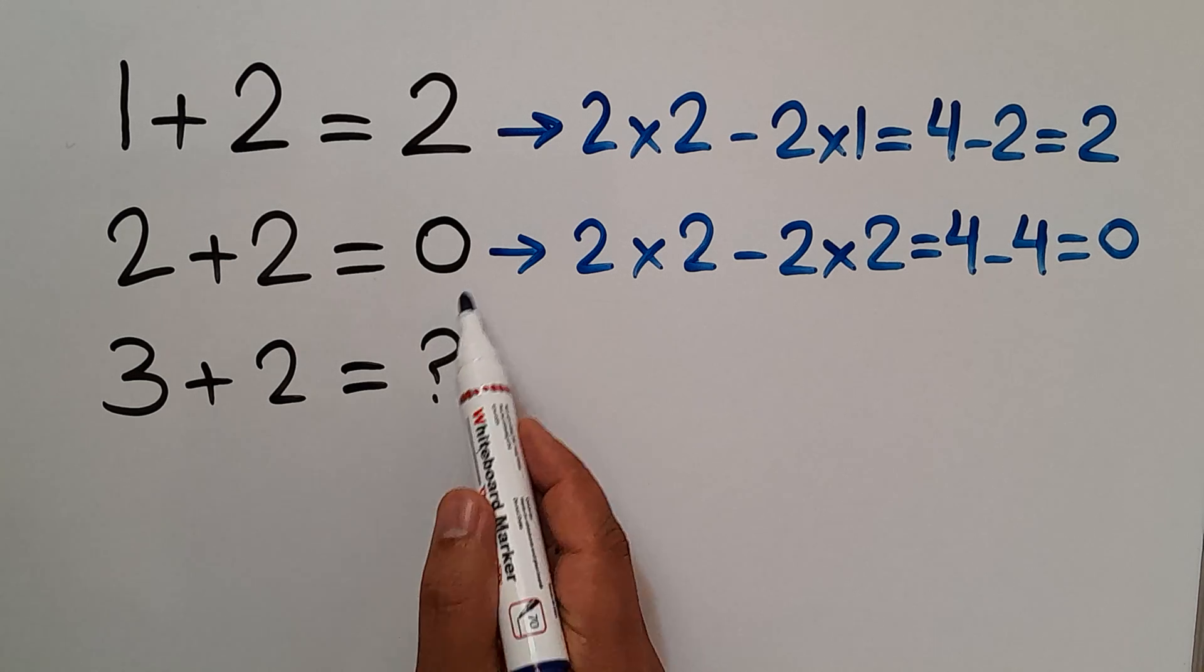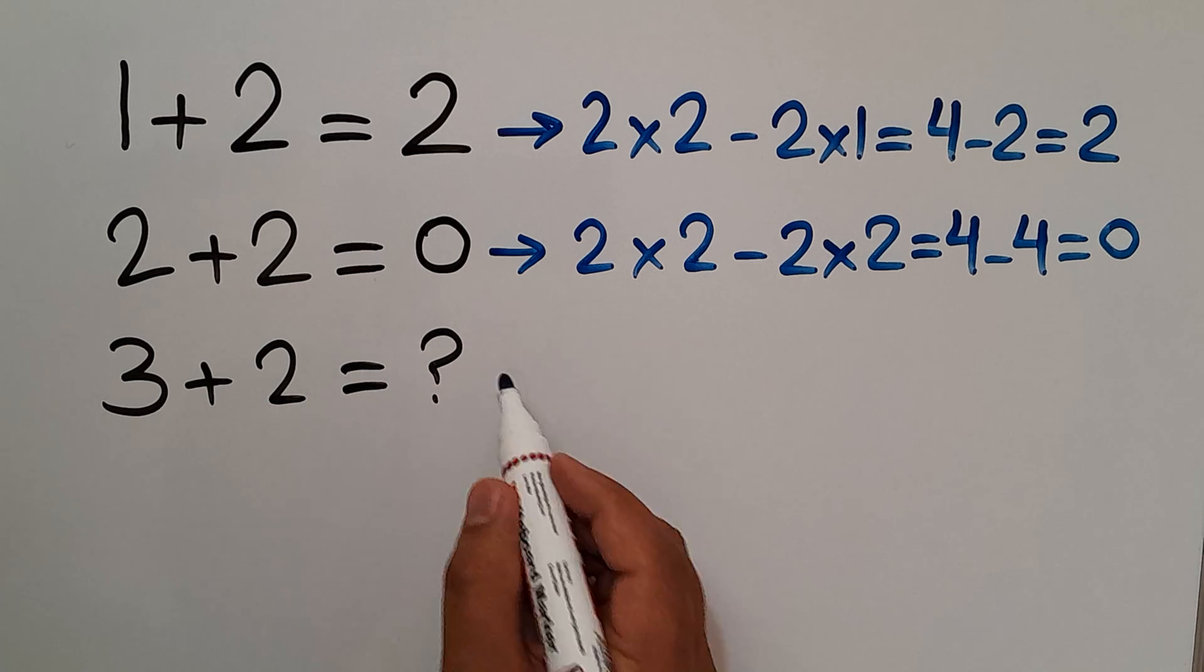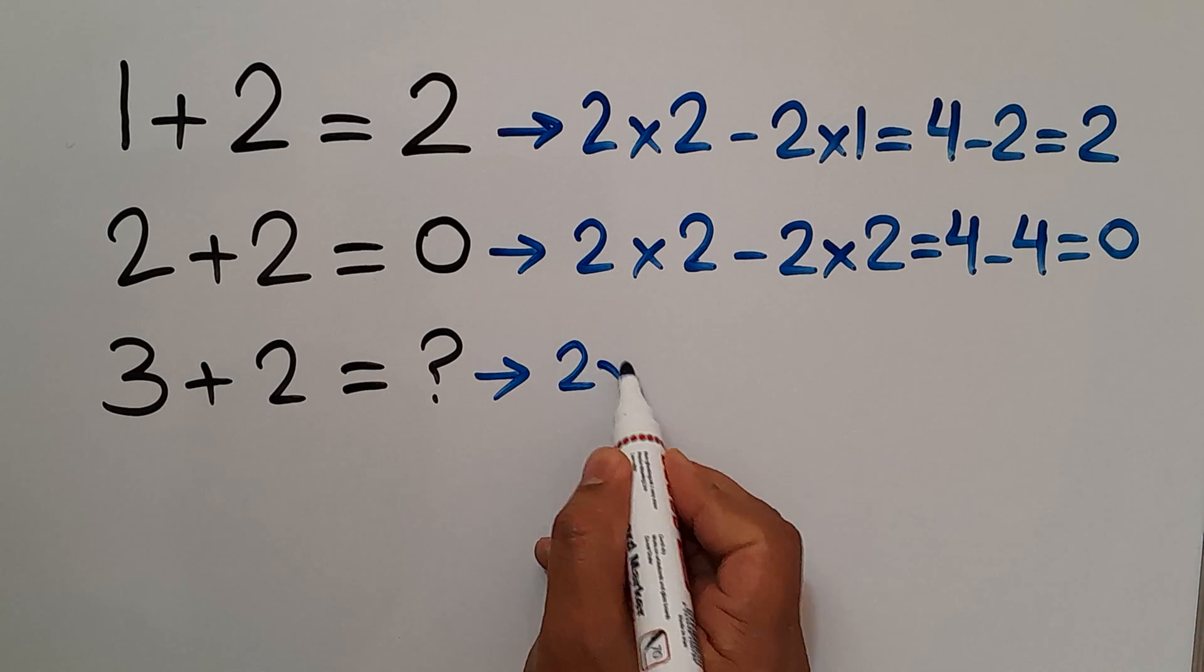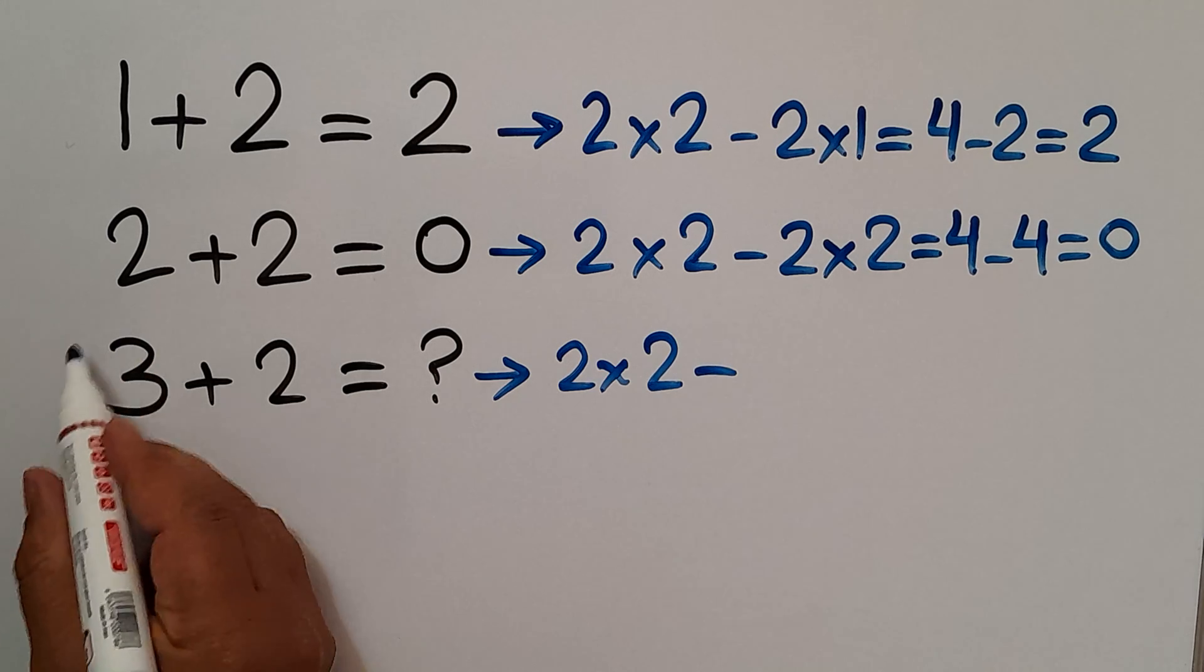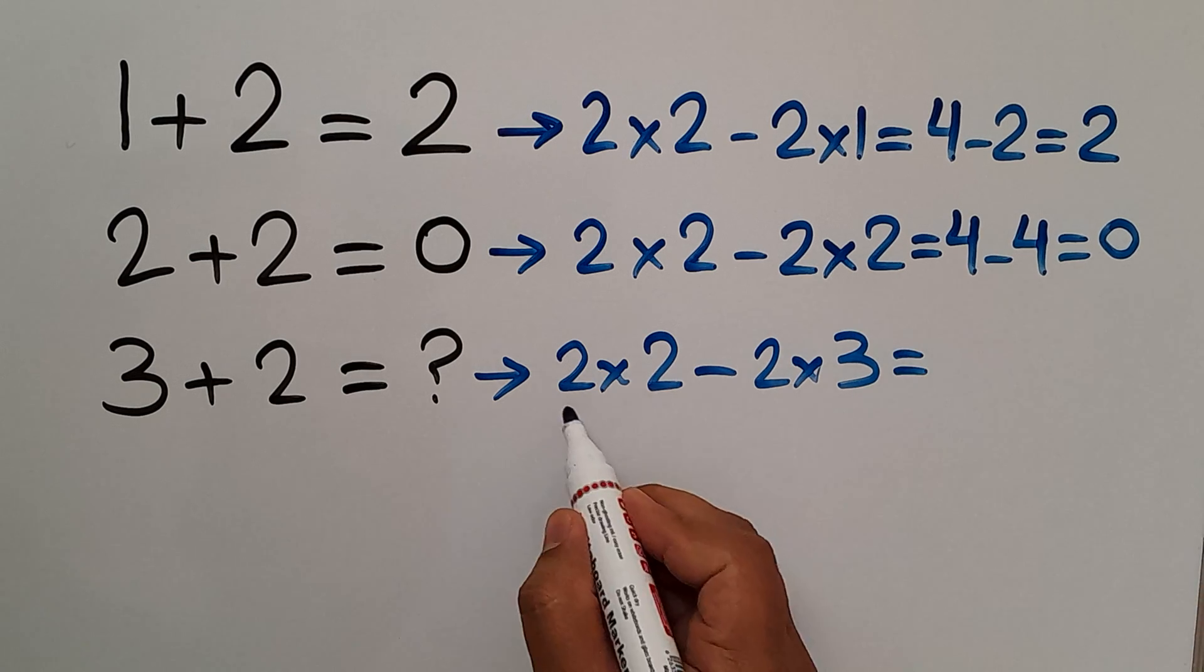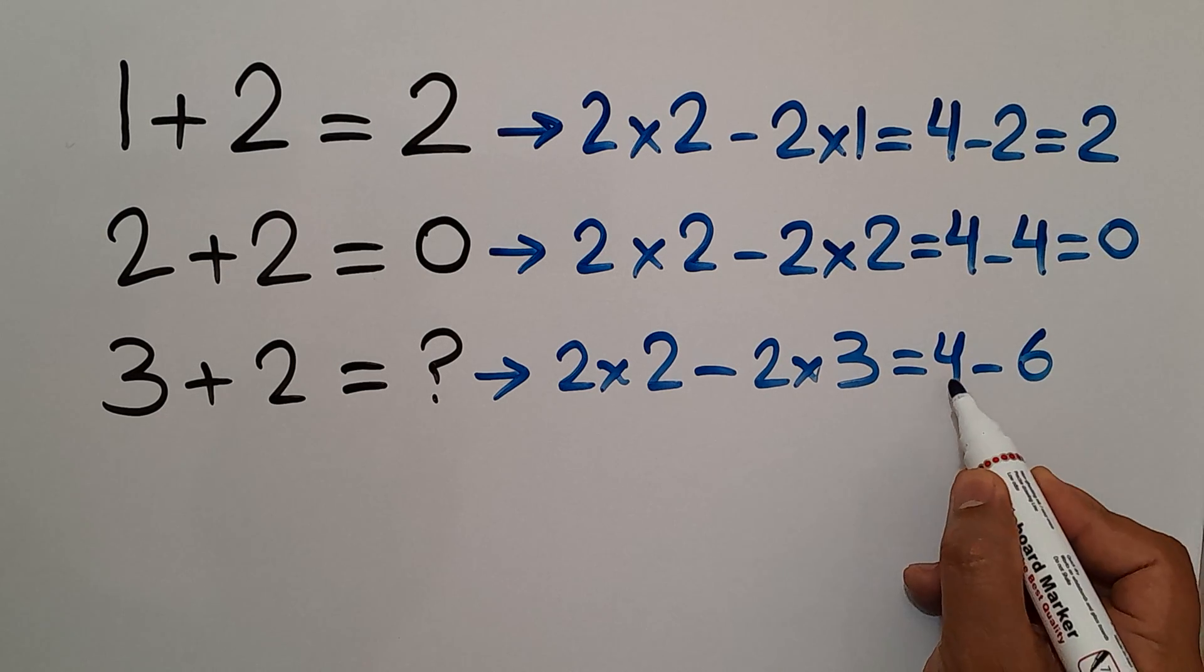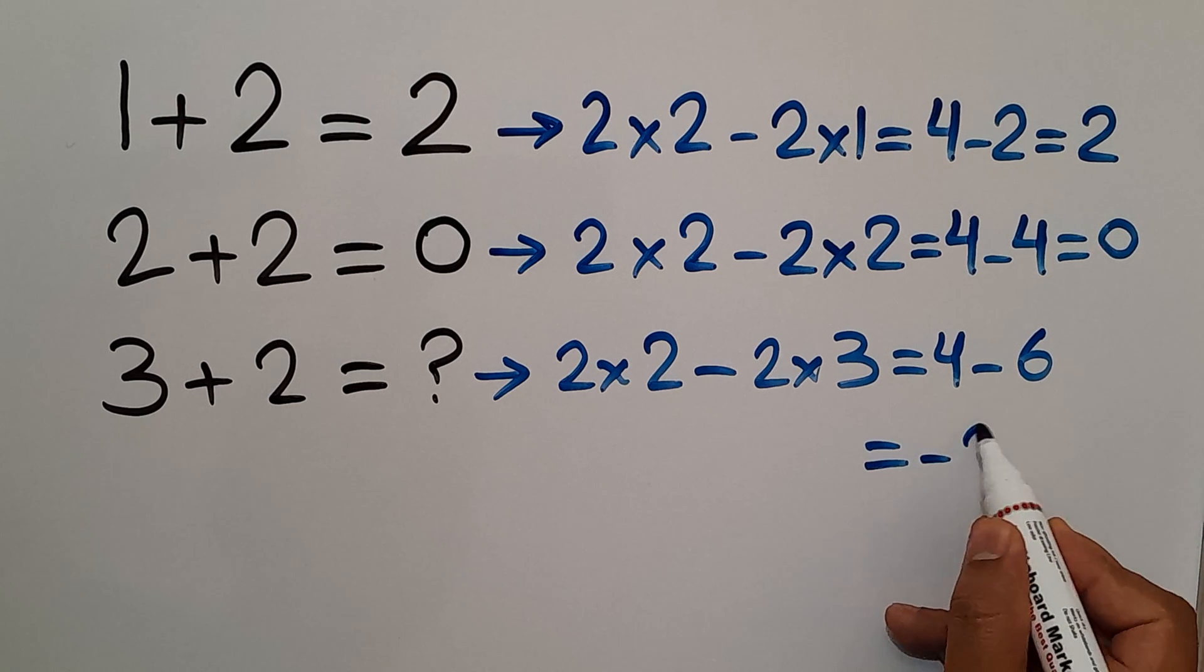So let's use this pattern to find the missing number. 2 times the second number, 2 times 2, minus 2 times the first number, 2 times 3, equals 4 minus 6, which equals negative 2.